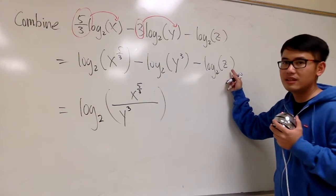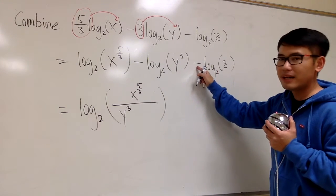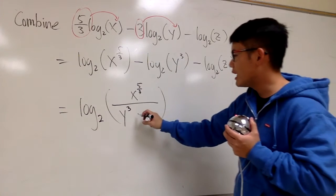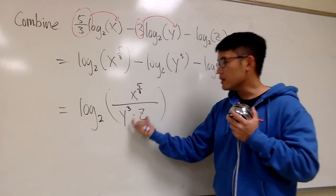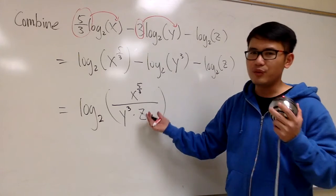How about the last one, z? Well, because it's minus, this z will go in the denominator as well. And technically, they are multiplying in the denominator, so you should put that if you would like.